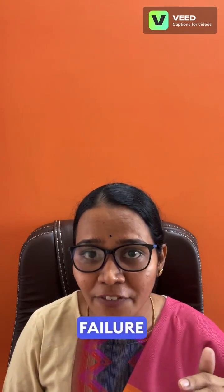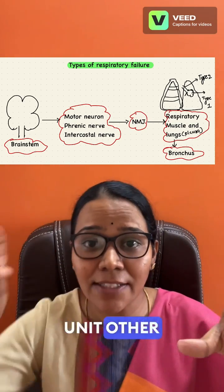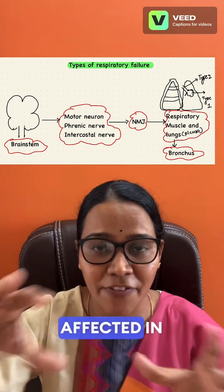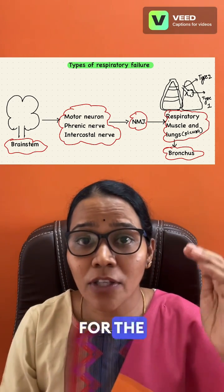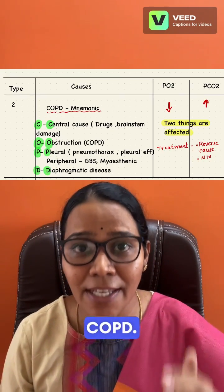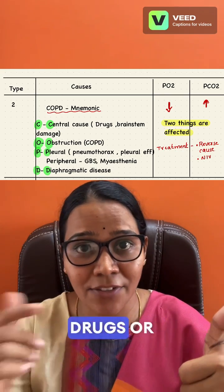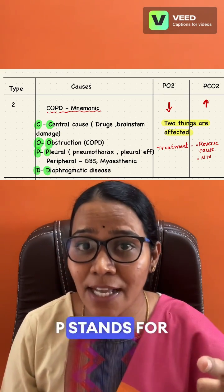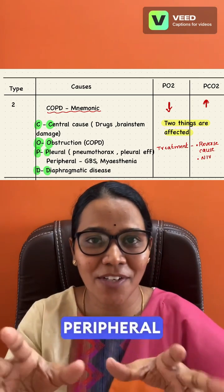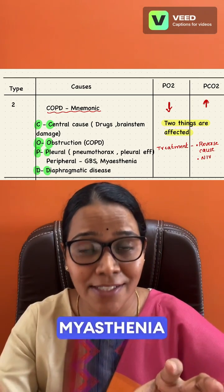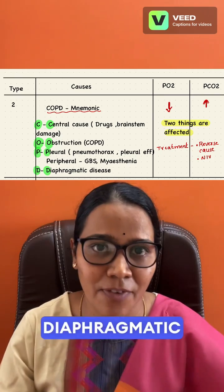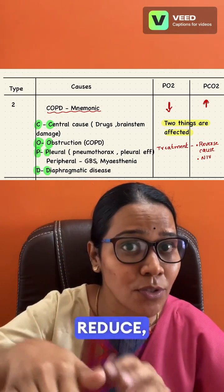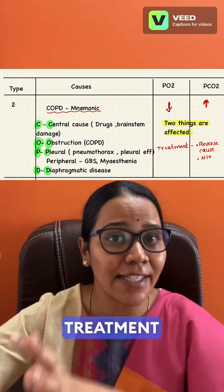Type 2 respiratory failure: any respiratory unit other than the alveolus — from the brain to the bronchus — can be affected. Causes are remembered with the mnemonic 'COPD' — C: central causes like drugs or meningitis, O: obstruction like COPD, P: pleural and peripheral disorders like Guillain-Barré syndrome and myasthenia gravis, D: diaphragmatic disorders. In type 2, both PO2 reduces and PCO2 increases. Treatment is NIV.